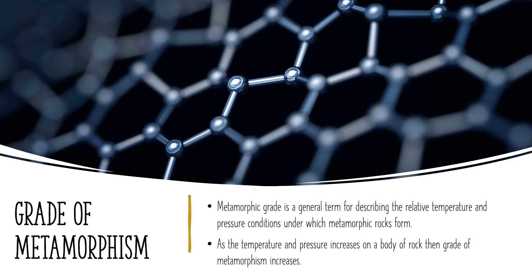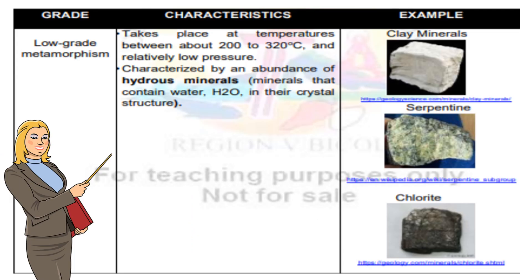Now let us talk about grade of metamorphism. Metamorphic grade is a general term for describing the relative temperature and pressure conditions under which metamorphic rocks form. As temperature and pressure increase on a body of rock, the grade of metamorphism increases. Low-grade metamorphism takes place at temperatures between about 200 to 320 degrees Celsius and relatively low pressure. This is characterized by an abundance of hydrous minerals — minerals that contain water in their crystal structure — such as clay materials, serpentine, and chlorite.